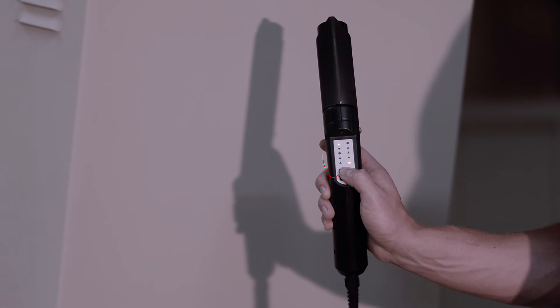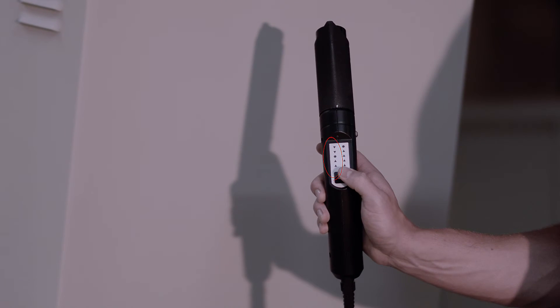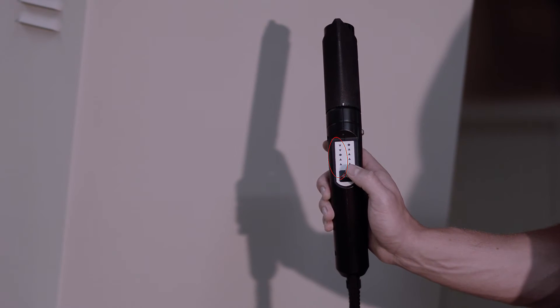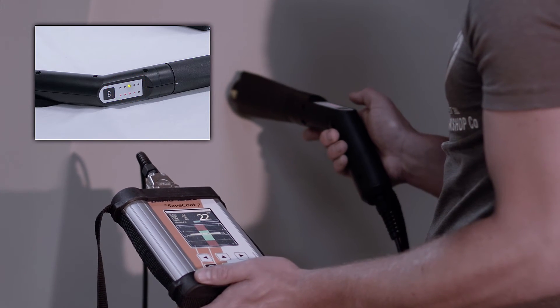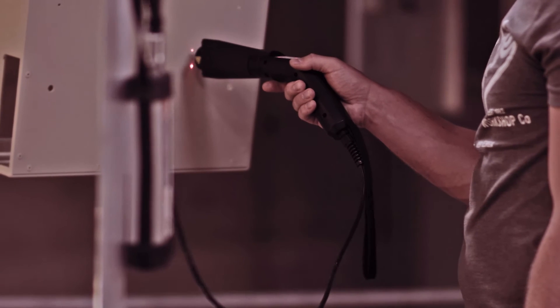The distance LEDs on the left hand side indicate the distance from the sensor to the surface. The optimal distance is reached as soon as the green light comes on.